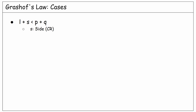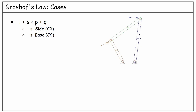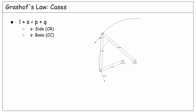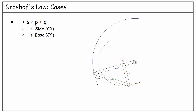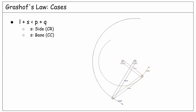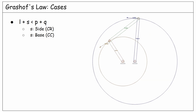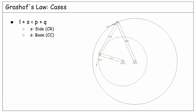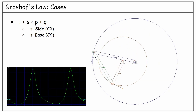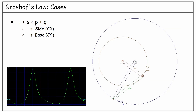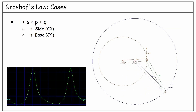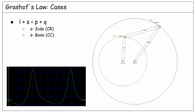The next subcase says if the shortest link is the base, then we should expect a crank-crank motion, as you see in this working linkage. Again, the driver rotates at a constant speed, but the follower has a highly variable speed during the motion, as you see in this plot.